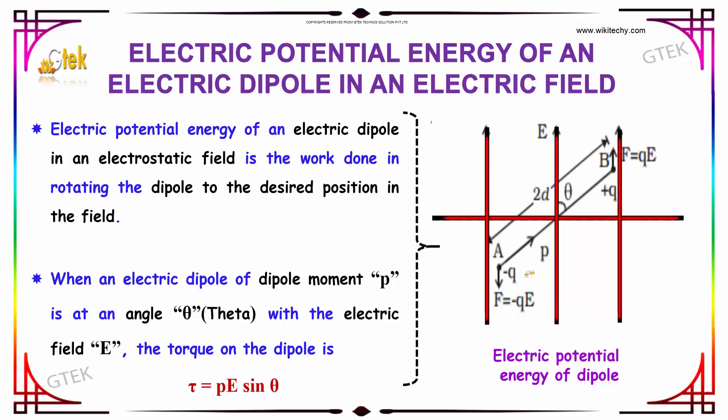The electric potential energy of an electric dipole in an electrostatic field is the work done in rotating the dipole to the desired position in the field.